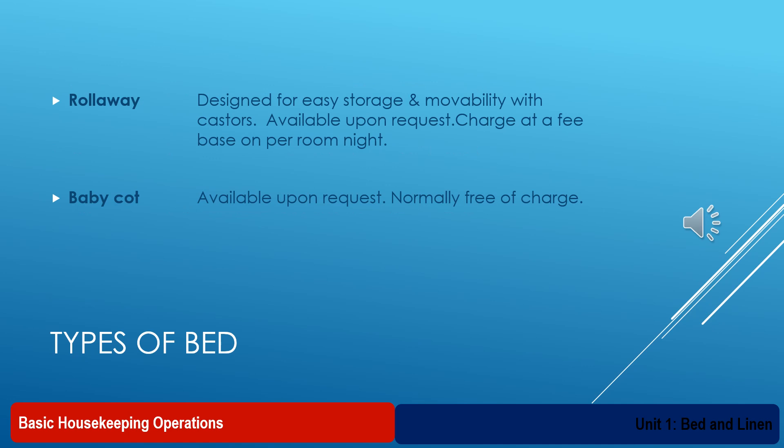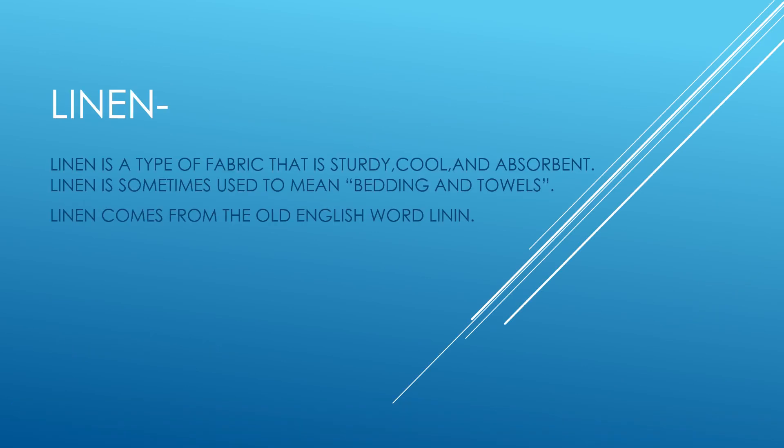Roll away bed — this is designed for easy storage and movability with casters. These are available upon request and guests need to pay extra charges per night. For example, Z bed, Murphy bed, etc. Then we have baby cot — these are also available on request and are normally free of charge.